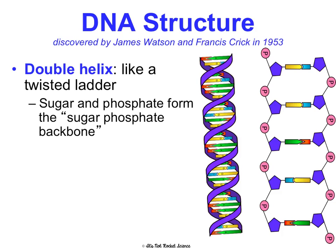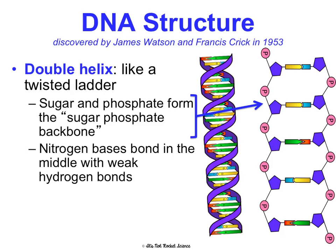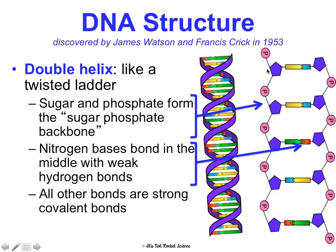DNA is made of sugar and phosphate, which form the sugar-phosphate backbone. If you look at the unspun version, you'll see phosphate, sugar, phosphate, sugar alternating on both sides — that's why we call them the sides of the ladder. In the middle, the nitrogen bases pair up, and they're held together by weak hydrogen bonds. The bonds along the sides are strong covalent bonds, but the bonds in the middle are weak hydrogen bonds.